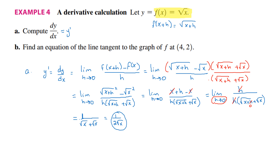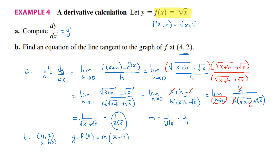In part b, they want the equation of the tangent at (4, 2). For the point (4, 2), a is 4 and f of a is equal to 2. To find the slope, go back to part a and substitute x by 4: 1 over 2 radical 4, which equals 1 over 4, or a quarter. The tangent line is y minus 2 equals a quarter times x minus 4. In slope-intercept form: y equals a quarter x minus 1 plus 2, which equals a quarter x plus 1.